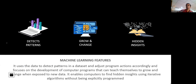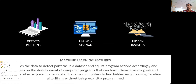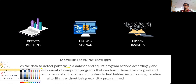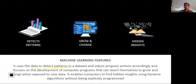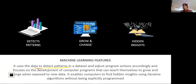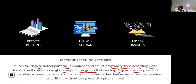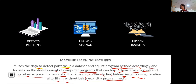What are the characteristics of machine learning? It uses data to detect patterns in the dataset and adjust program actions accordingly. It focuses on development of computer programs that can teach themselves to grow and scale when exposed to new data. This is what enables computers to find hidden insights through an iterative algorithm without being explicitly programmed — the machine has to learn on its own.